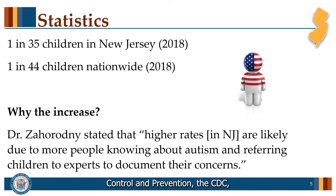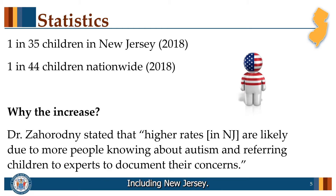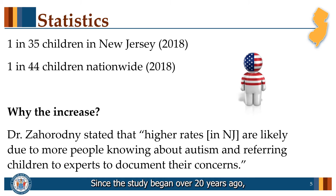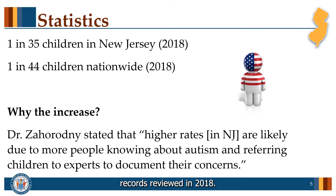According to the CDC, the national rate of children identified with ASD is 1 in 44 children. This statistic is based on their evaluation of health and educational records of 8-year-old children in 2018 across 11 states, including New Jersey. New Jersey had one of the highest rates of autism in the nation with 1 in 35 children, or 2.8% of 8-year-old children. Since the study began over 20 years ago, the ADAM — the Autism and Developmental Disabilities Monitoring Network — has been reviewing records and issuing biannual reports on their prevalence findings. The 2021 Prevalence Report is from records reviewed in 2018.